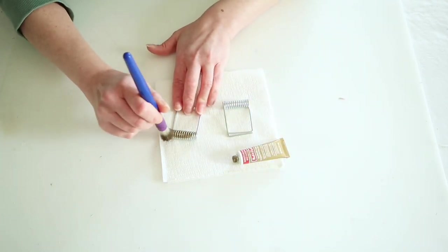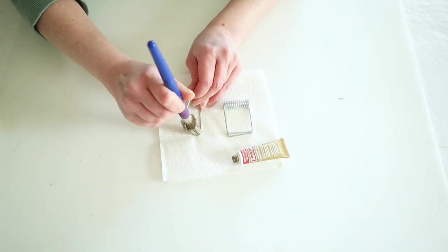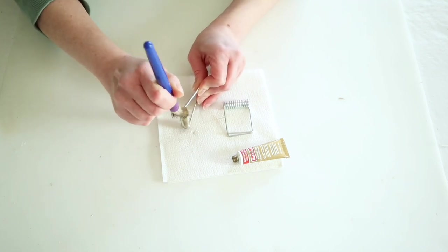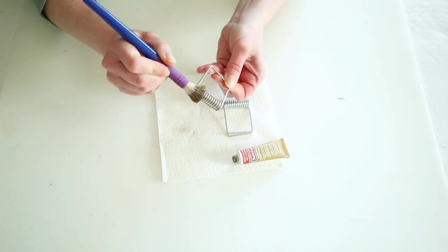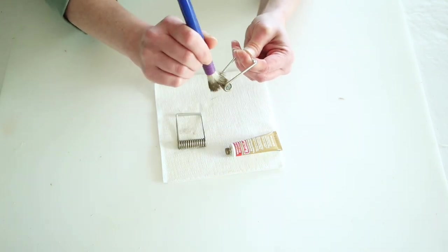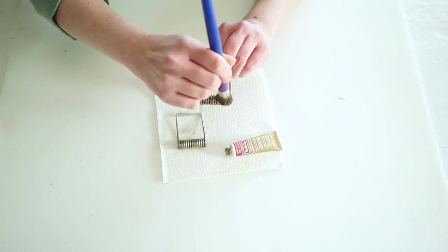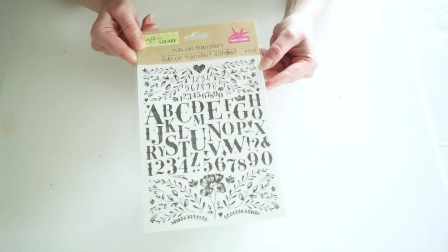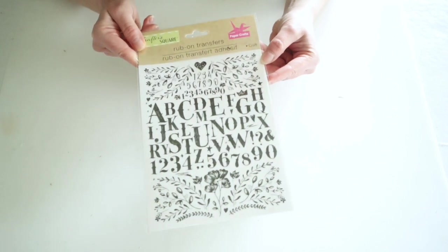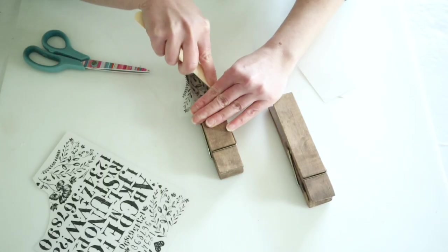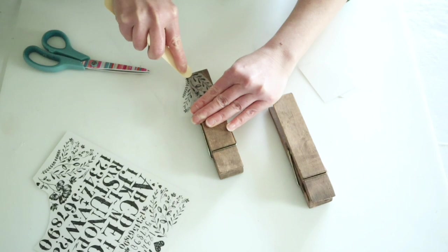I wasn't a huge fan of the little silver springs on these, so I'm using some of my European gold rub and buff and brushing over these to age them up and change them from that silver color. Once everything was dry, I'm going to put these clothespins back together.